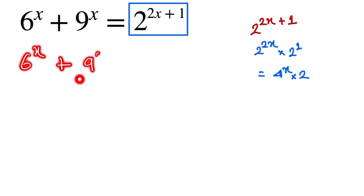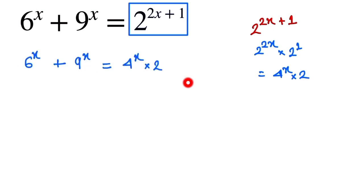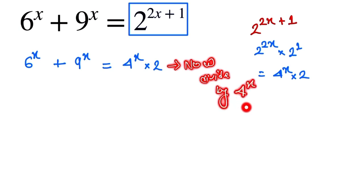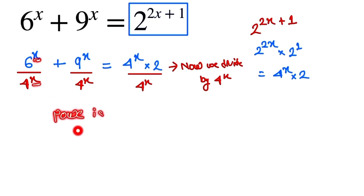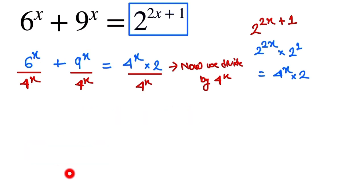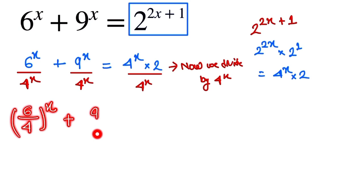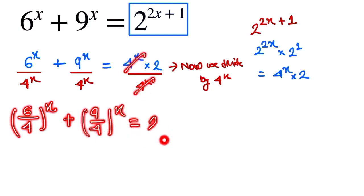So now we have 6 to the power x plus 9 to the power x is equal to 4 to the power x into 2. Now we divide everything by 4 to the power x. When the power is the same, we can write 6 by 4 the whole to the power x, and 9 by 4 the whole to the power x. The 4 to the power x terms cancel out, leaving us equal to 2.